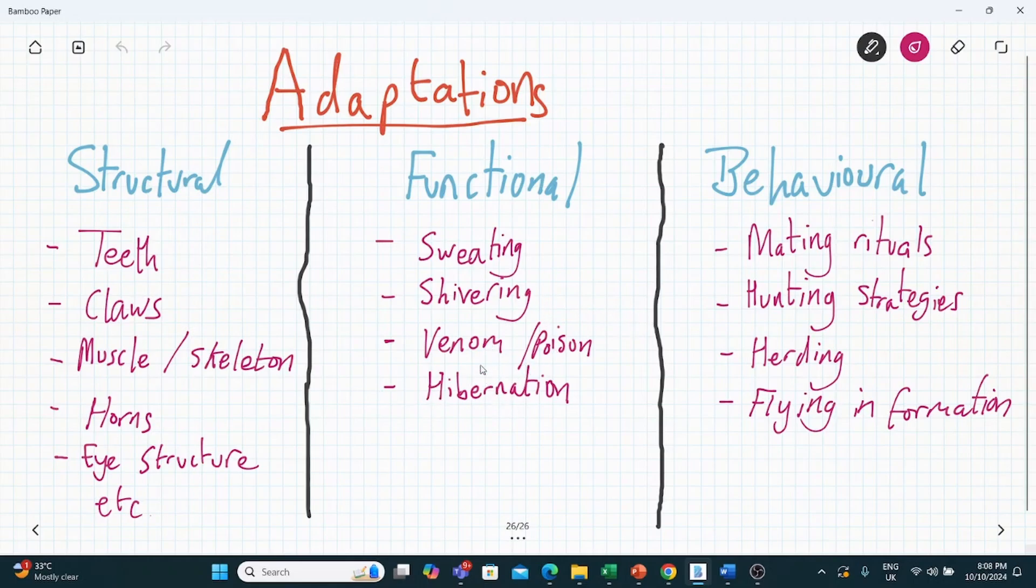and even hibernation, because that reduces the metabolism of an organism. When it comes down to behavioural adaptations, we've got things like mating rituals, hunting strategies, herding, flying in formation, those sorts of things. They are down to the behaviour of the organism.